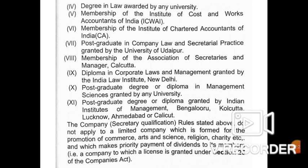Other acceptable qualifications for companies with paid-up capital less than ten crores include: LLB (degree in law), ICWAI qualification, CA, postgraduate in law and secretarial practice from Udaipur University, membership of the Association of Secretaries and Managers (Calcutta), diploma in corporate law and management from the Indian Law Institute (New Delhi), postgraduate degree or diploma in management science from any university, and postgraduate degree or diploma from IIMs at Bengaluru, Calcutta, Lucknow, or Calicut. Any one of these eleven qualifications makes a person eligible for the Company Secretary post in such companies.